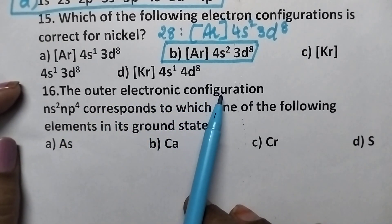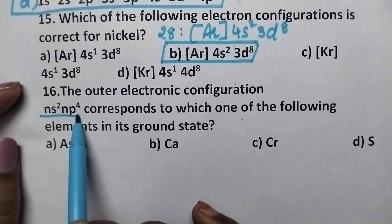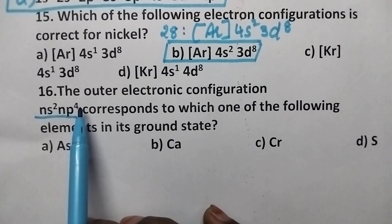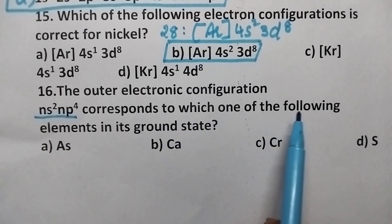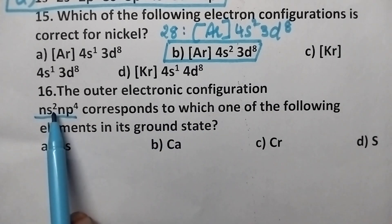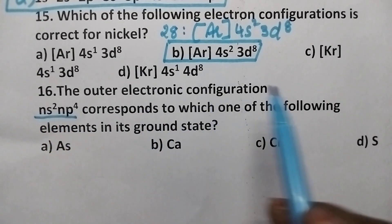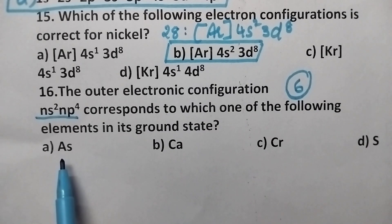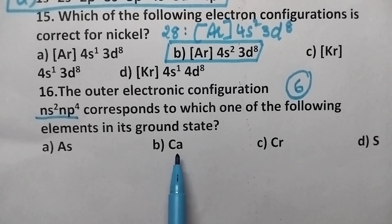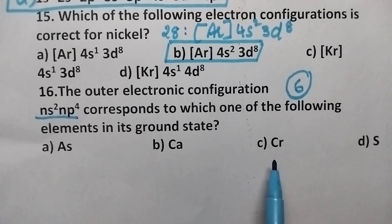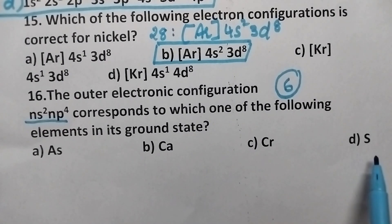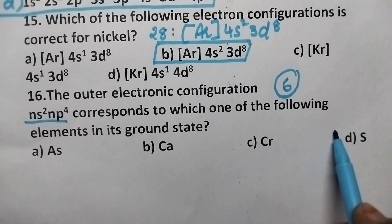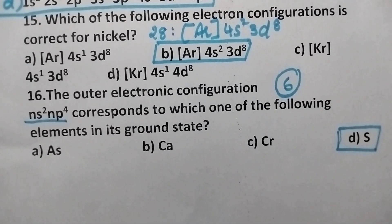The outer electronic configuration ns², np⁴ corresponds to which element in its ground state? ns², np⁴ means the outermost orbit has 6 electrons. Arsenic (Z=33) has 13 outermost electrons; calcium (Z=20) has 2; chromium (Z=24) has 4. Coming to sulfur, it contains 6 electrons in the outermost orbit. So option D is the right answer — the element is sulfur.